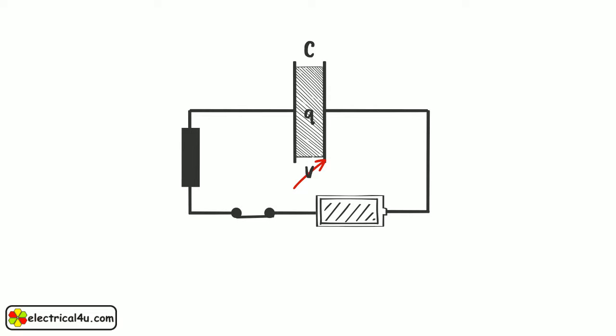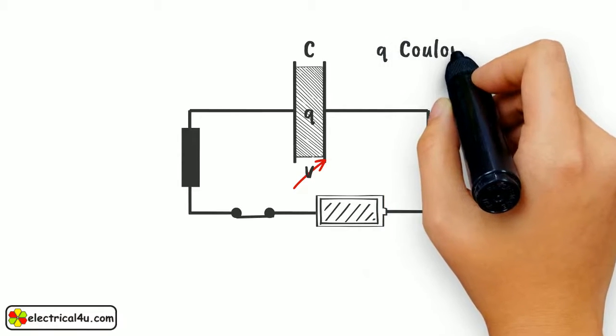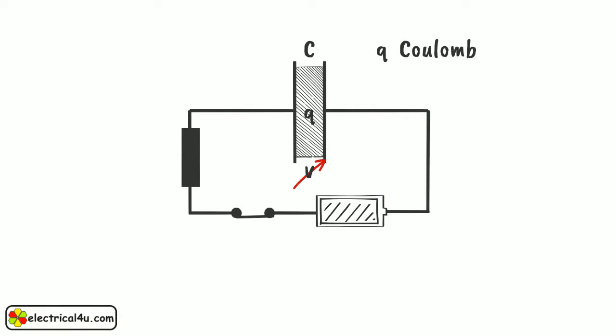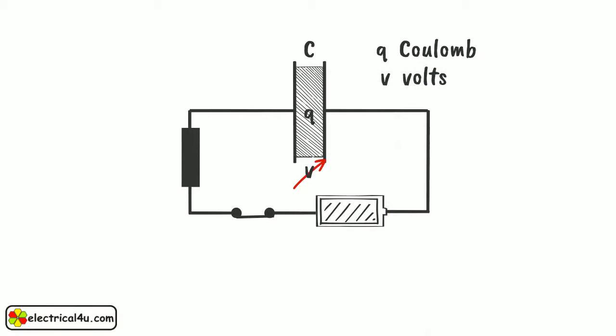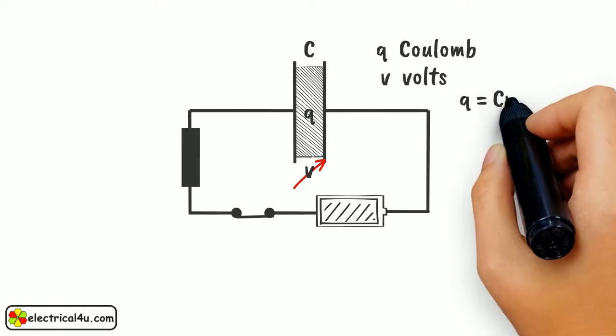If at any instance the charge accumulated in the capacitor is Q Coulomb, and for that the voltage established across the capacitor is V Volt, then we can write Q equals to C into V.